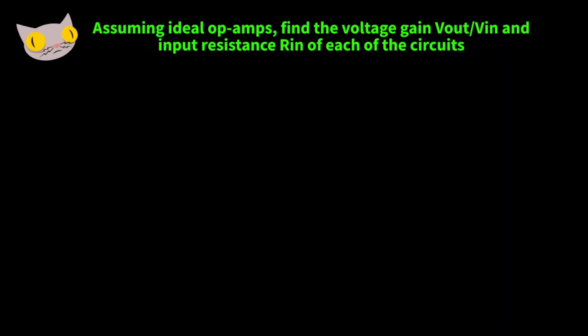In this video we're going to be looking at some ideal op amps. We're going to find the voltage gain, or Vout over Vin, and the input resistance of each of the circuits.